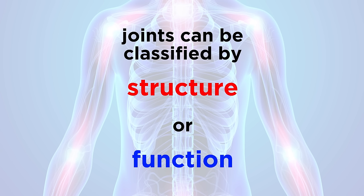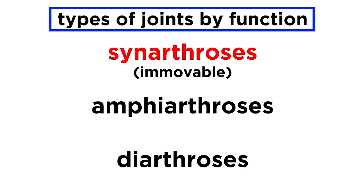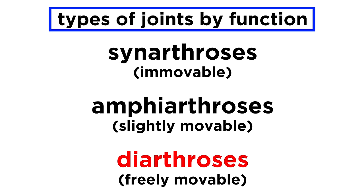We can classify joints either by their structure or by their function. If by function, we are referring to the extent of mobility that is provided by the joint. Synarthroses are immovable, amphiarthroses are slightly movable, and diarthroses are freely movable. These each serve their own particular purpose within the skeletal system.